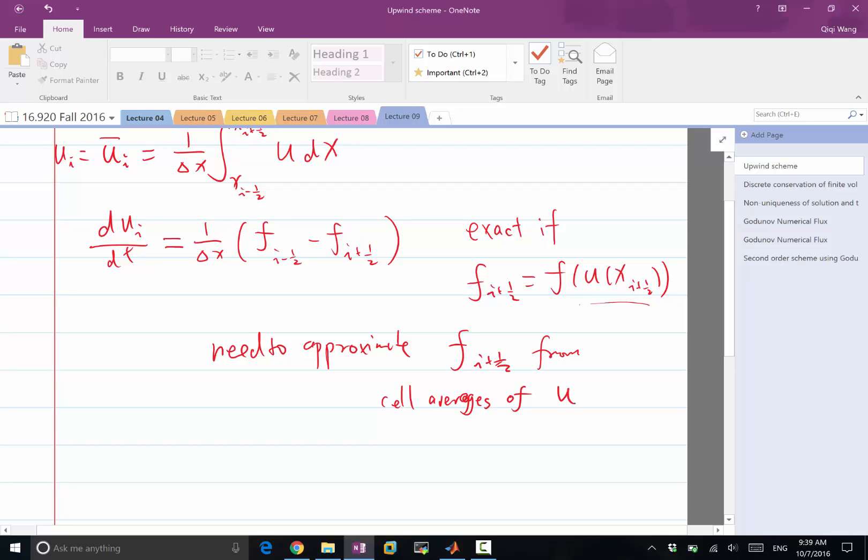In the last class, we did a central average type of approximation. We computed f on the cell average values and just averaged two neighboring cells to get the flux. It turns out to be a working scheme before any discontinuity developed. And after a shock wave is developed, oscillation starts to form. The solution goes crazy and we didn't want that.